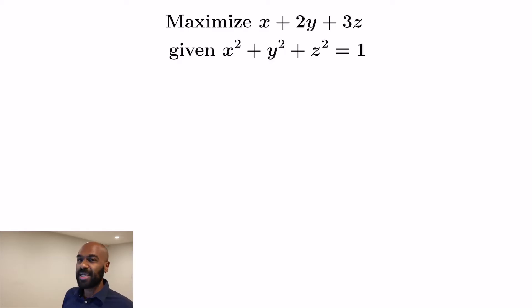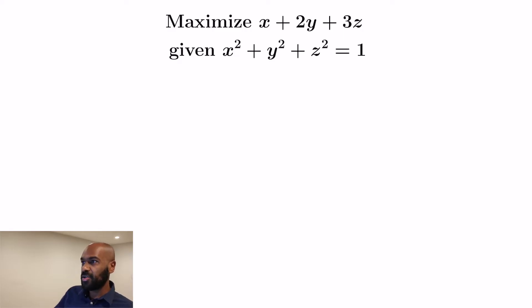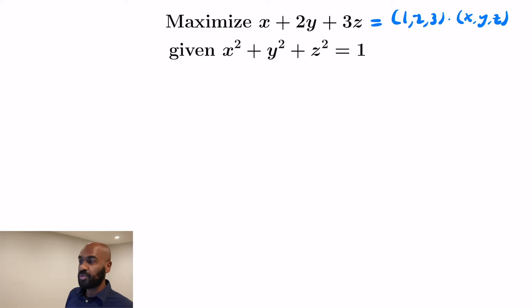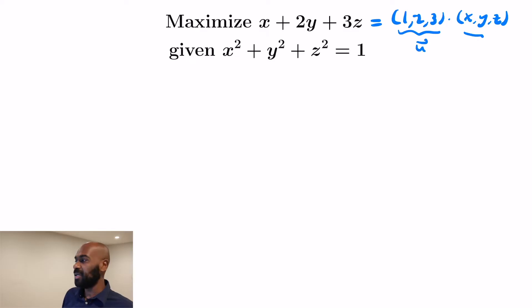Let's look at an application: maximize X + 2Y + 3Z given that X² + Y² + Z² = 1. We're maximizing a linear function subject to being on the surface of a sphere. The expression we're trying to maximize can be represented as the dot product of the vector (1, 2, 3) and the vector (X, Y, Z), which sets us up perfectly for Cauchy-Schwarz.